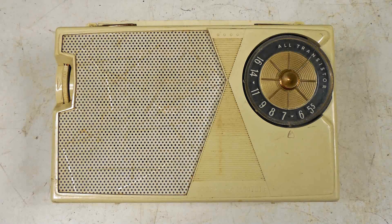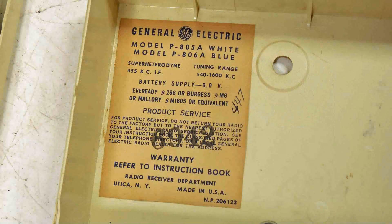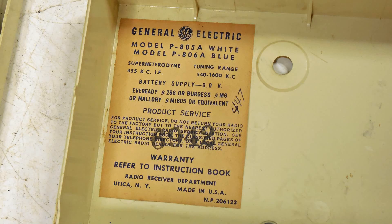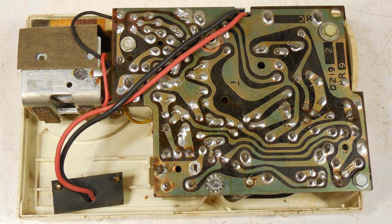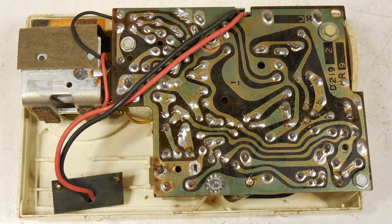This is a GE radio manufactured in 1959 and it is a model P805A. There's the circuit board. Doesn't look like anybody's been in it, which is good news.